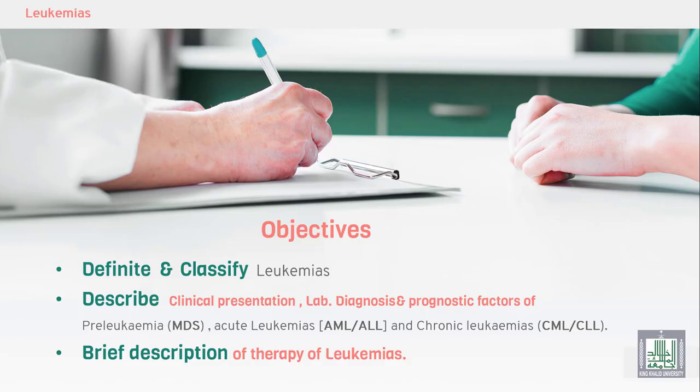Objectives of our lecture: definition and classification of leukemia. First we have to define leukemias — what are leukemias? Then, description of the clinical presentation, lab diagnosis, and prognostic factors of different types of leukemias. Before leukemia, we will explain the term pre-leukemia. Finally, we will give a brief description of the therapy of leukemia.